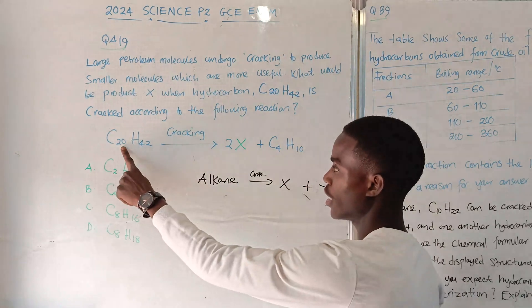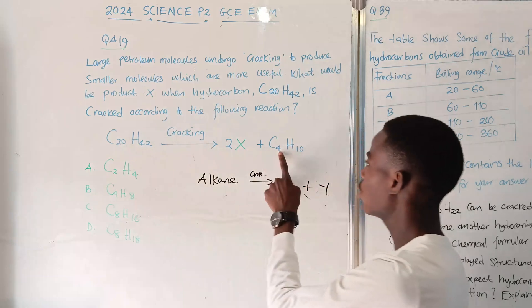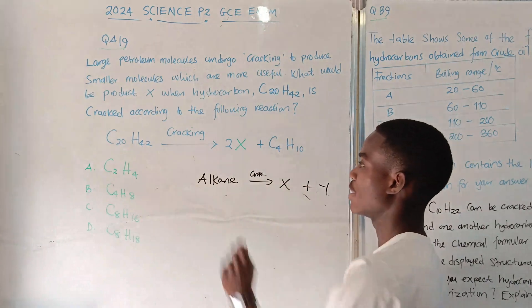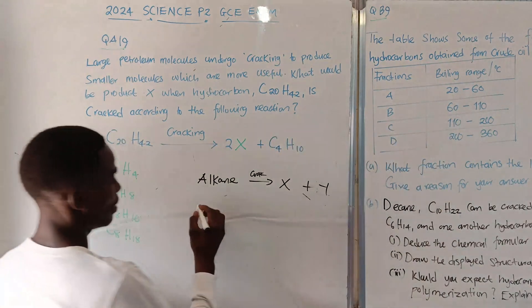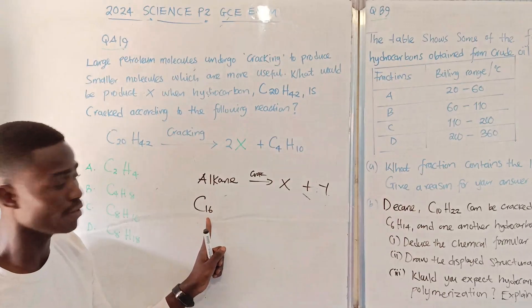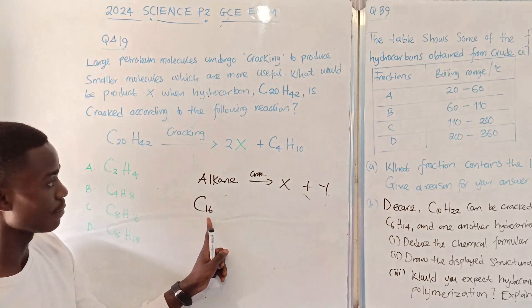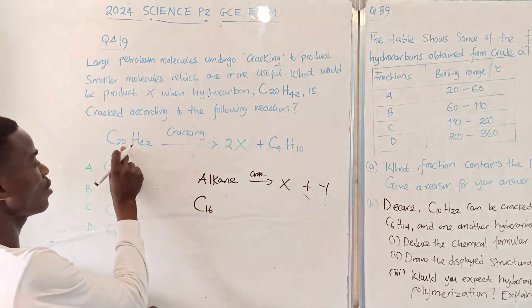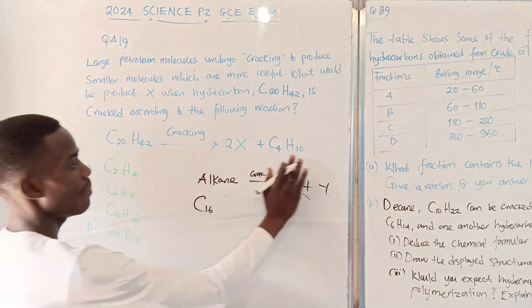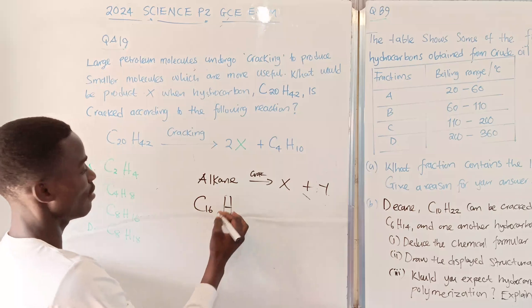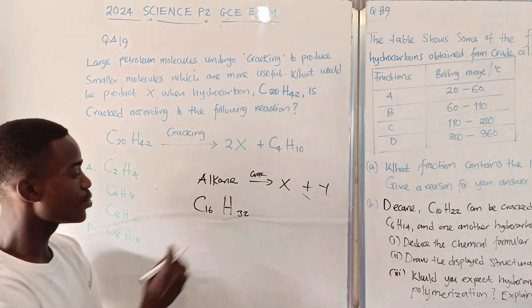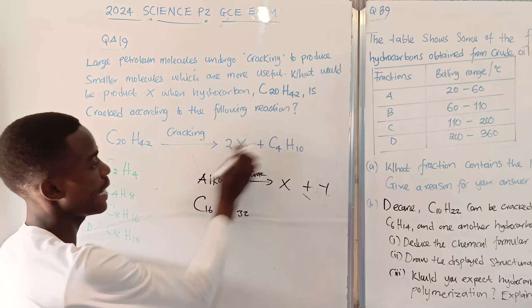From the 20 carbons, we have 4 here. Meaning that what is remaining is 16. Then 42 minus 10, I need to have something like 32. This was supposed to be our answer for X.